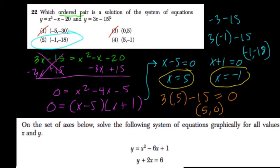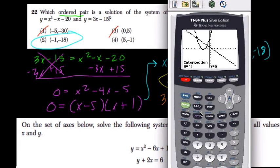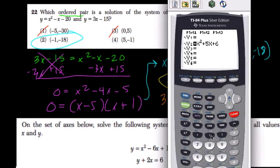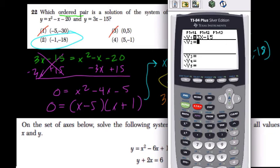Choice 2. So on the graphing calculator, go to y equals here. Clear these functions out. Enter in 3x minus 15. That's our line. Press enter. Clear off any functions that are there. Hit x squared. Press the right key to get out of the exponent. Minus x minus 20.